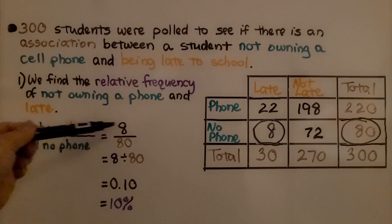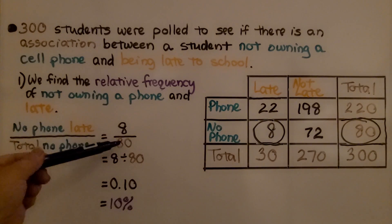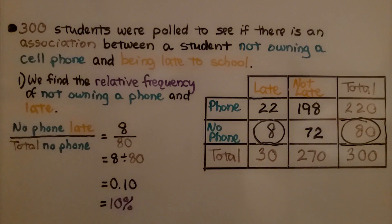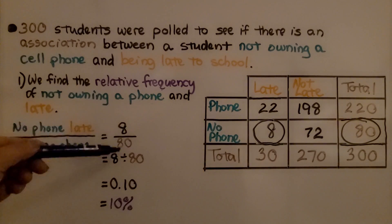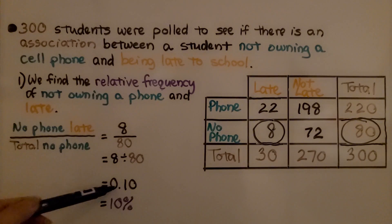We have no phone late is 8, and we put it over the total of no phones, which would be 80. That's our ratio. 8 divided by 80 is 10 hundredths, which is the same as 10%.